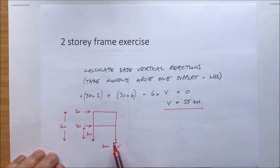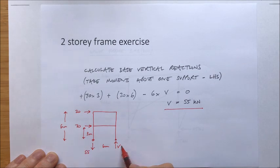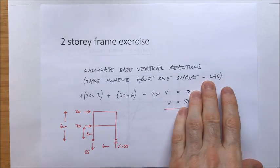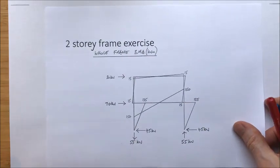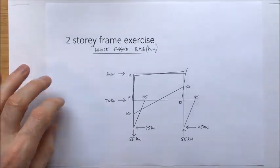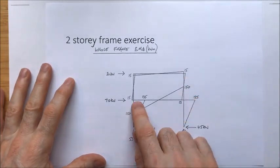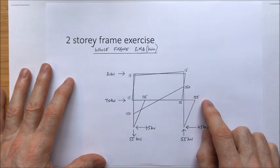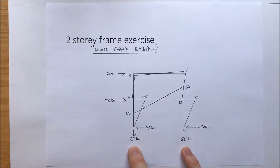I can now simply resolve vertically and I can see that there's only V heading upwards. Therefore, the reaction on the left hand side must be 55 running downwards. Let's have a look now at the final frame. So there we are. For the entire frame, I've drawn on the bending moment diagram for each of the legs and the beams. I've added in the horizontal reactions and the vertical reactions. And that's pretty much a two-storey frame completed.